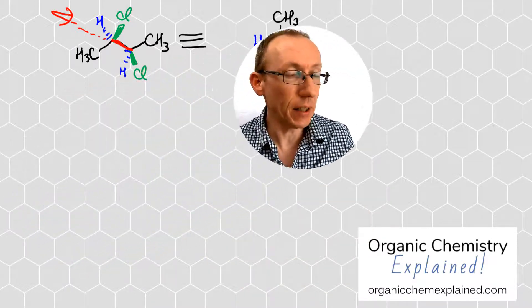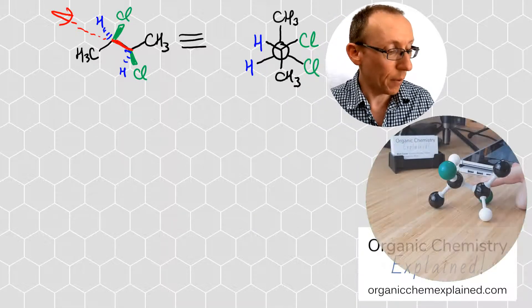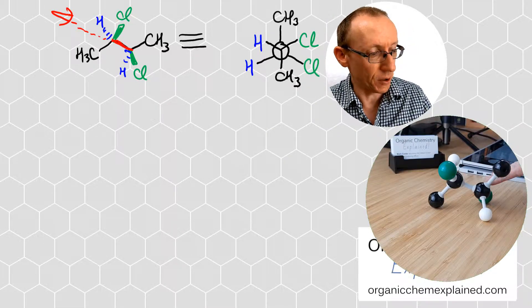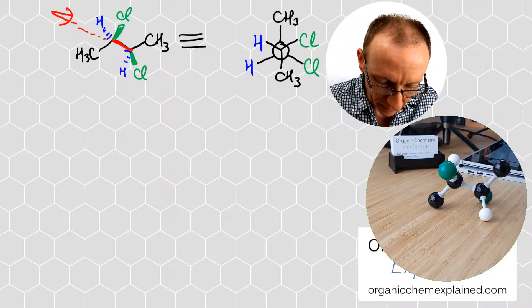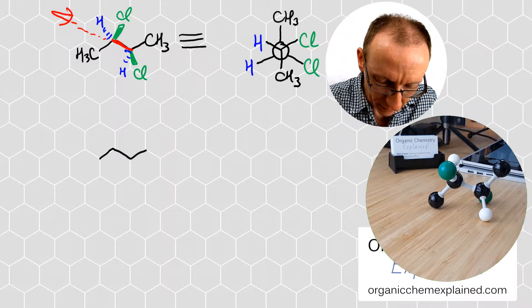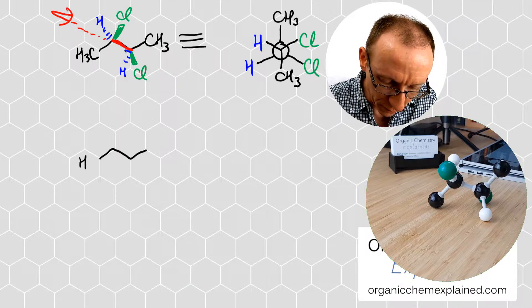That's that particular example. Let's look at another example. Now we've got a different diastereomer of this 2,3-dichlorobutane. So let's draw out that. We've got a four carbon chain again. I'll draw in the methyl group straight away this time.